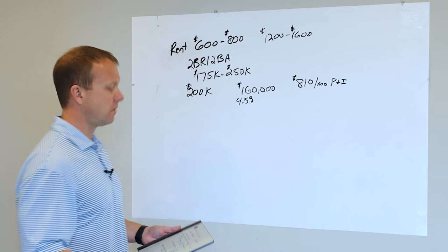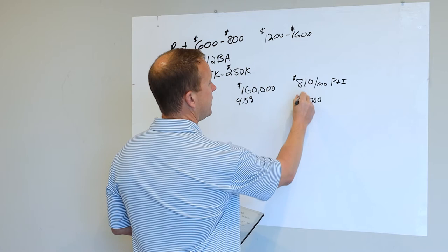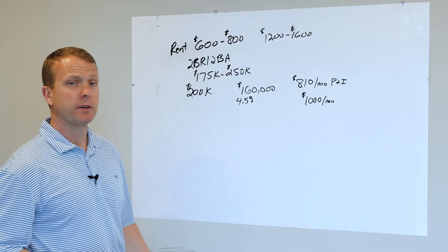So I'm going to just, for easy numbers, I'm going to just round that up. Let's just say your payment all in is $1,000 per month. So you're looking at $1,200 to $1,600 to rent something. You've got a payment for $1,000.